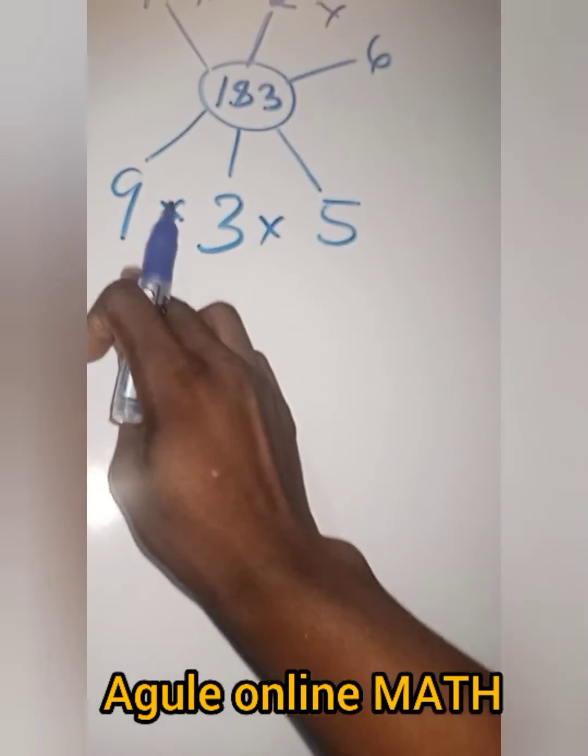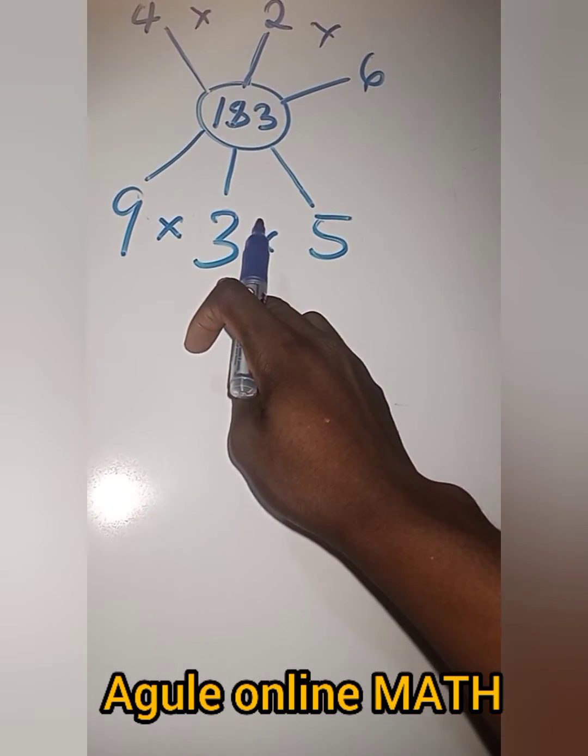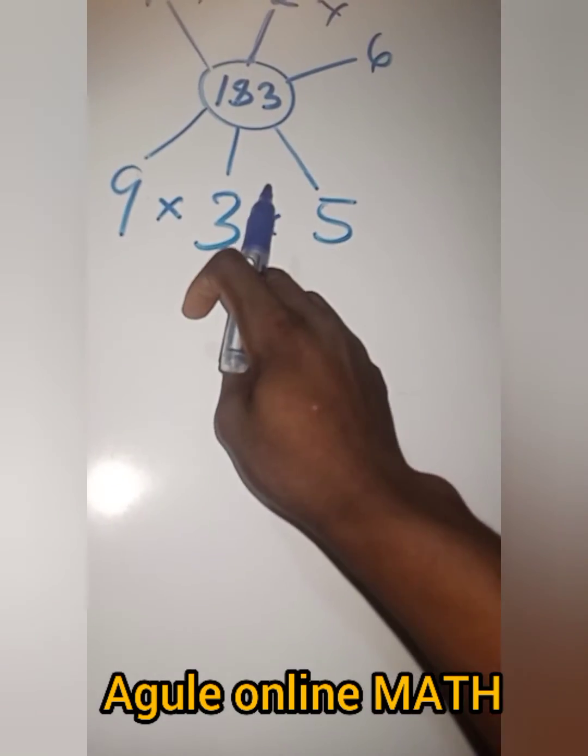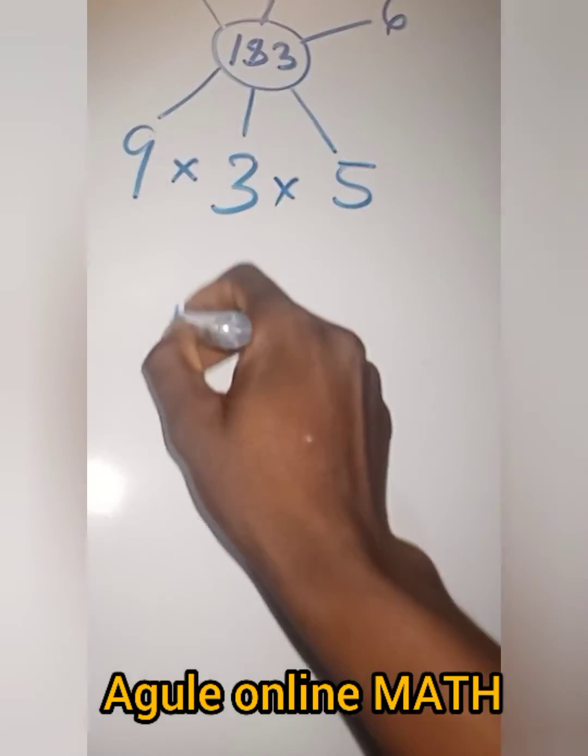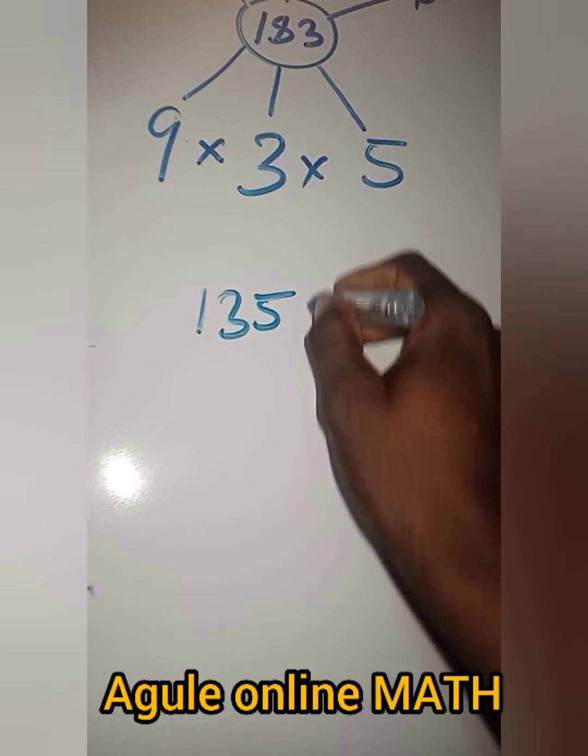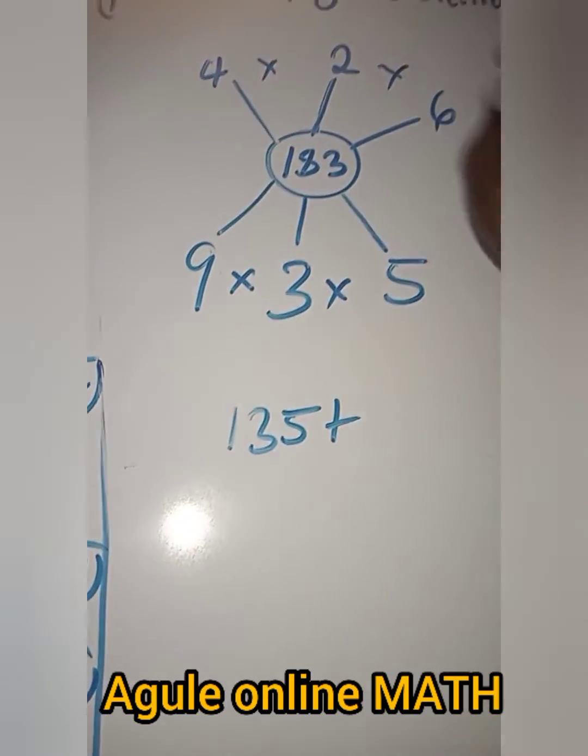So we have 9 times 3, that's 27. 27 times 5, that is 185. So 185 plus the one up.